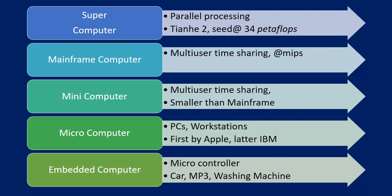Next, slightly smaller, comes the mainframe computer, which is used by organizations with multi-user, time-sharing as the main property, at a speed measured in MIPS. Next are mini-computers, used by small organizations, also having multi-user, time-sharing properties, and smaller than mainframe.